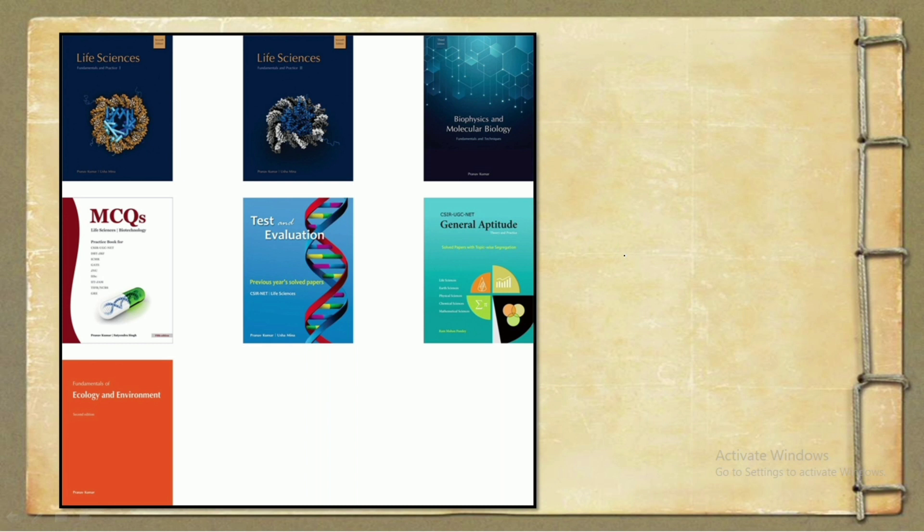First of all, we have to understand that when we buy the Pathfinder book set, we get seven books in total. Two of them are of theories, then we have one book for biophysics and molecular biology. Next, we have three books for the evaluation process, the MCQ type books, and one book is for ecology and environment.